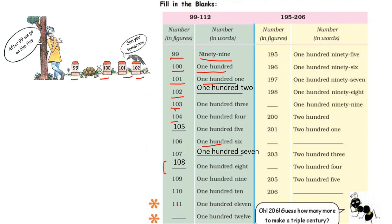What can be written here? 111. After 111, what comes? After 111, 112 comes. Continuing: 195, 196, 197, 198, 199. And in figures, what we write? We write 199.